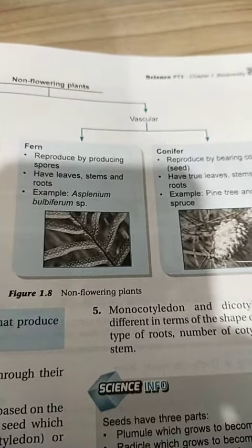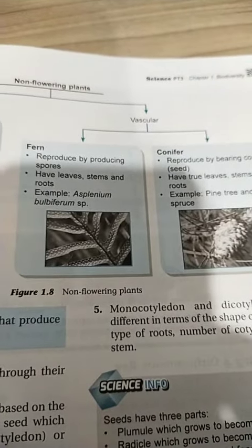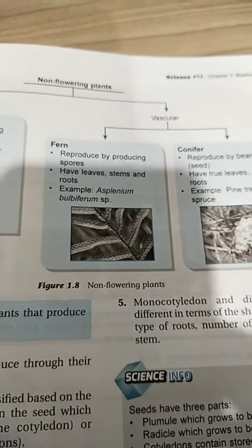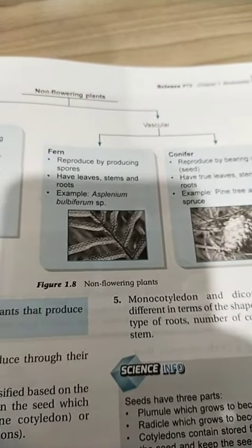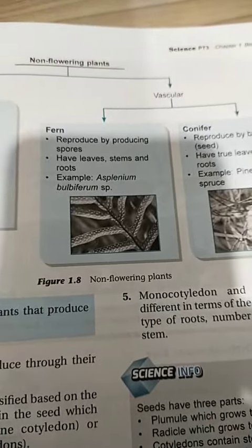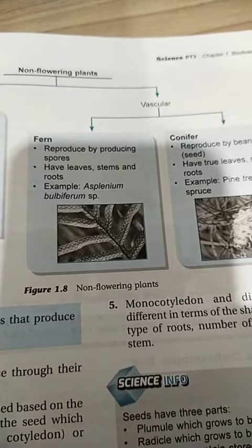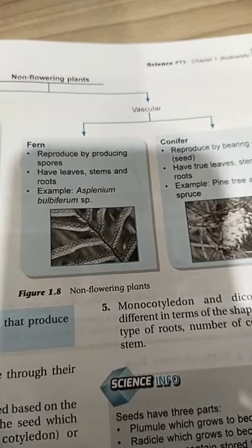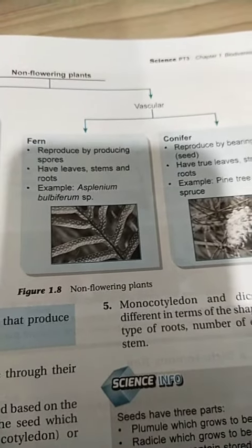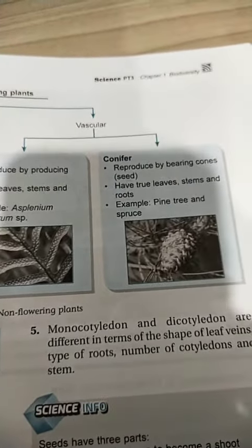Fern reproduces by producing spores. It has leaves, stems, and roots. For example, Asplenium bulbiferum sp.